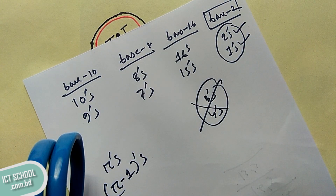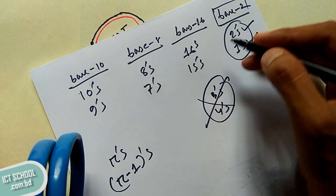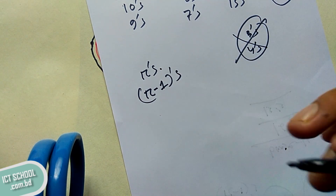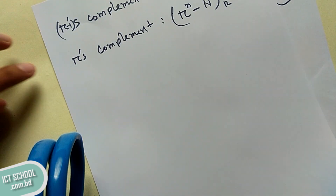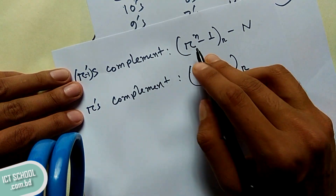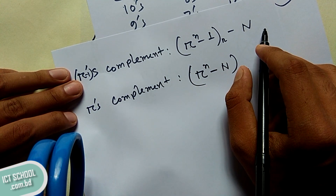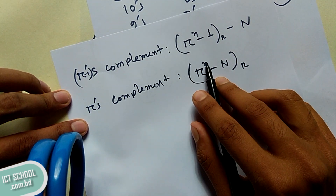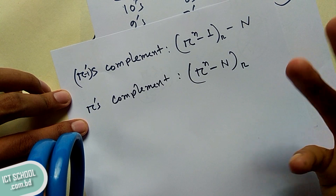I am first to say that this 2s complement and 1s complement, or rs complement and r-1s complement, that's how we can do this. r-1s complement is 0, r to the power n minus 1, which is r minus n. And rs complement is 0, r to the power n minus n, which is 0. Simple.